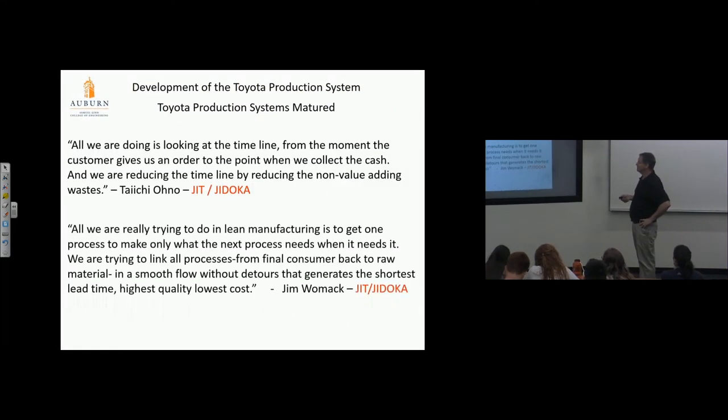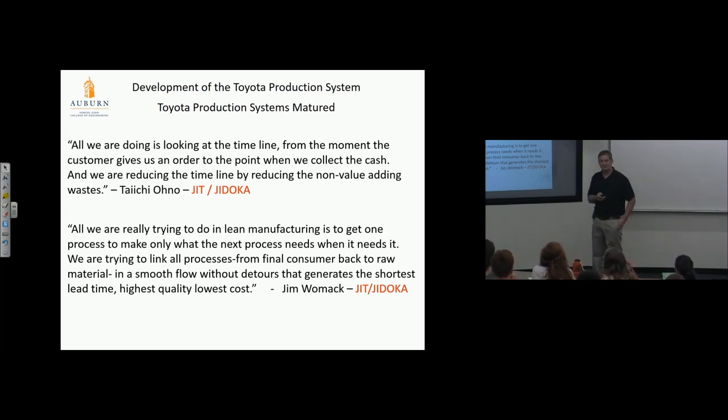A couple of quotes—very similar. Womack is the author of The Machine That Changed the World. Taiichi Ono: 'All we are doing is looking at the timeline from the moment the customer gives us an order to the point we collect cash. We're reducing that timeline by reducing non-value-added waste'—primarily massive inventories which take forever for a car to flow through the entire process if you're going first-in-first-out through inventory piles. He's saying completely eliminate inventory so time from order to delivery is the cycle time of the system added up theoretically. No defects, no inventory—ideally.